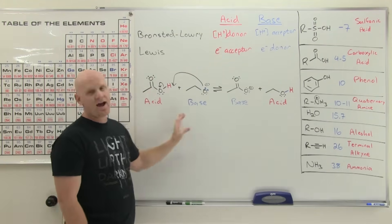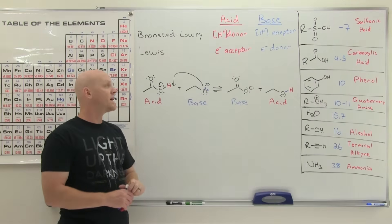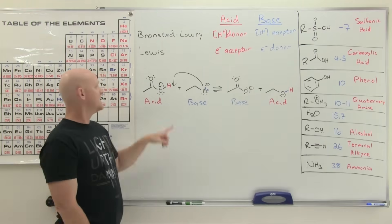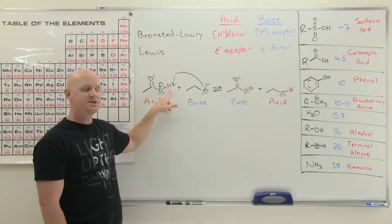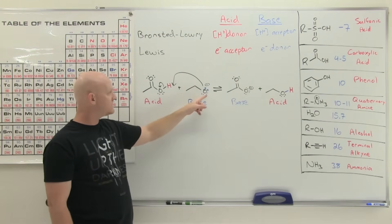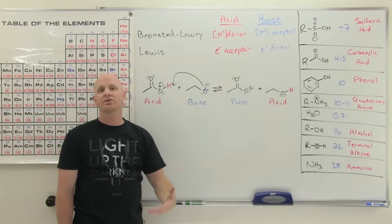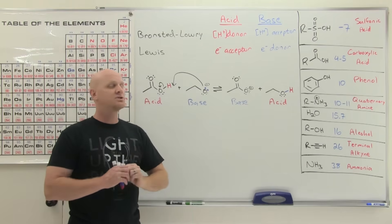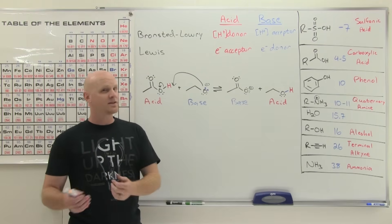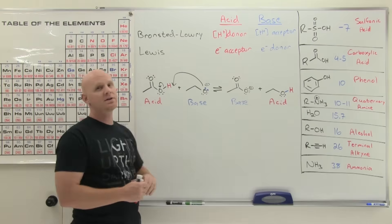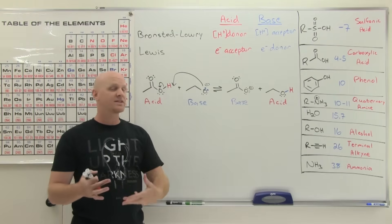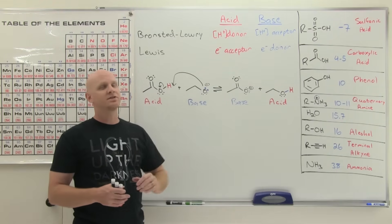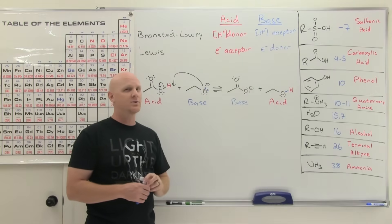For any acid-base reaction, you can always analyze it under Lewis's definition. To be a Bronsted-Lowry acid-base reaction, the atom you're bonding to has to be a hydrogen. However, if a base bonds to any other atom — bonds to carbon are really common in organic chemistry — you can classify it as a Lewis acid-base reaction but not as a Bronsted-Lowry reaction. This chapter we'll focus on reactions that are both, but in future chapters we'll see some that are only Lewis acid-base reactions.